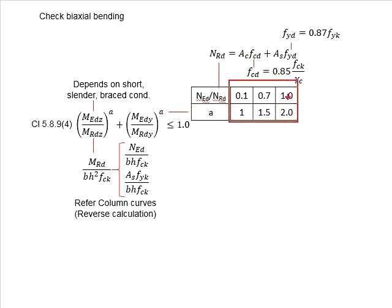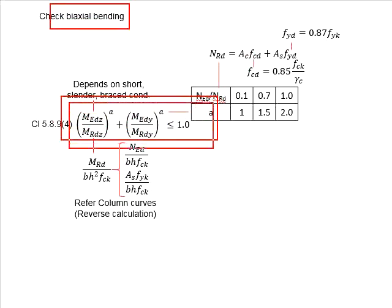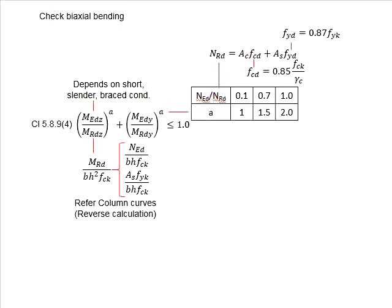As for the moment resistance of the columns, it is basically determined from the reverse calculation of the column curves. You know the axial loads acting on the column, and based on the amount of reinforcement bar provided, you are able to determine the moment resistance of the columns by referring to the column curve. The column is considered to pass in biaxial bending as long as it fulfills this criteria, where the summation of these two needs to be less than or equal to 1.0.